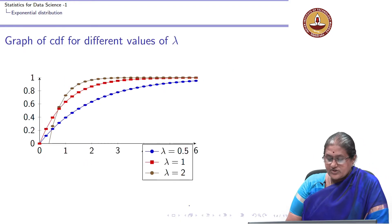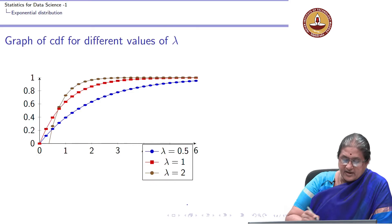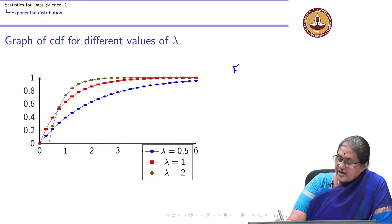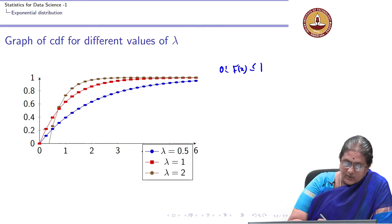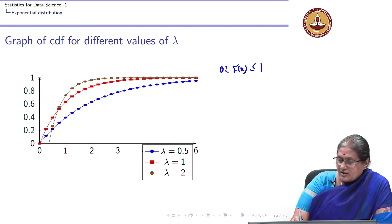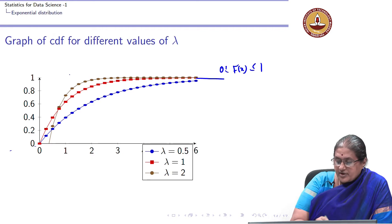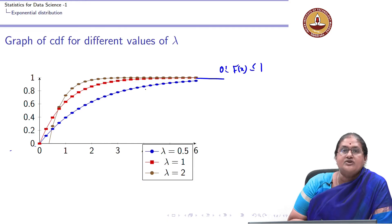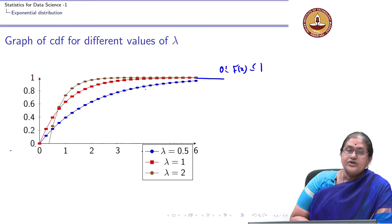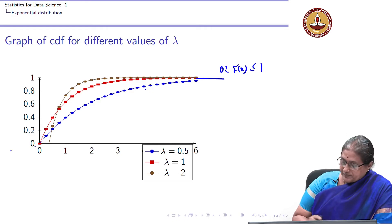For different values of lambda, the CDF F(x) always lies between 0 and 1. Below x equal to 0, the CDF is 0, and then all curves taper off toward 1. These are the shapes of the cumulative distribution function for various values of lambda.